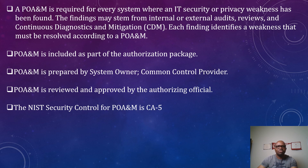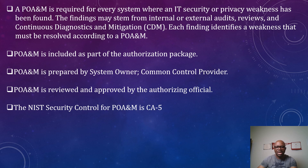PUEM is included as part of the authorization package, meaning one of the important documents needed to get your system authorized is the PUEM. PUEM is prepared by the system owner or common control provider, according to NIST 837 Revision 2. The PUEM is reviewed and approved by the authorizing official before it is used to assess the risk or grant authorization to that system. The NIST security control that covers PUEM is CA-5, according to NIST 853 Revision 5.